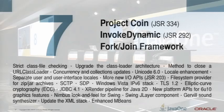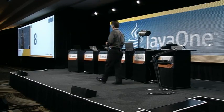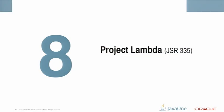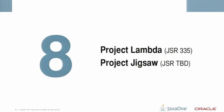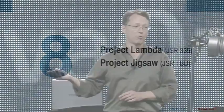I'd like to talk about two features we're thinking about for Java 8. One is Project Lambda, to bring closures to the Java programming language. The other is Project Jigsaw, which aims to define a module system not just for application code, but also for the platform itself.